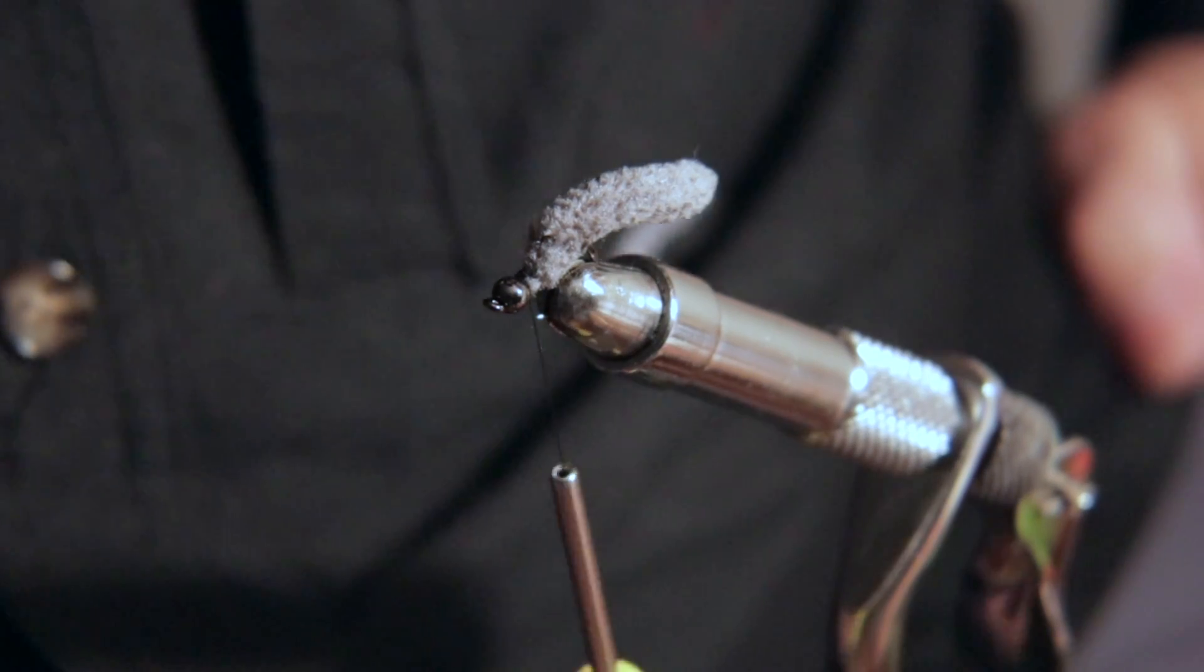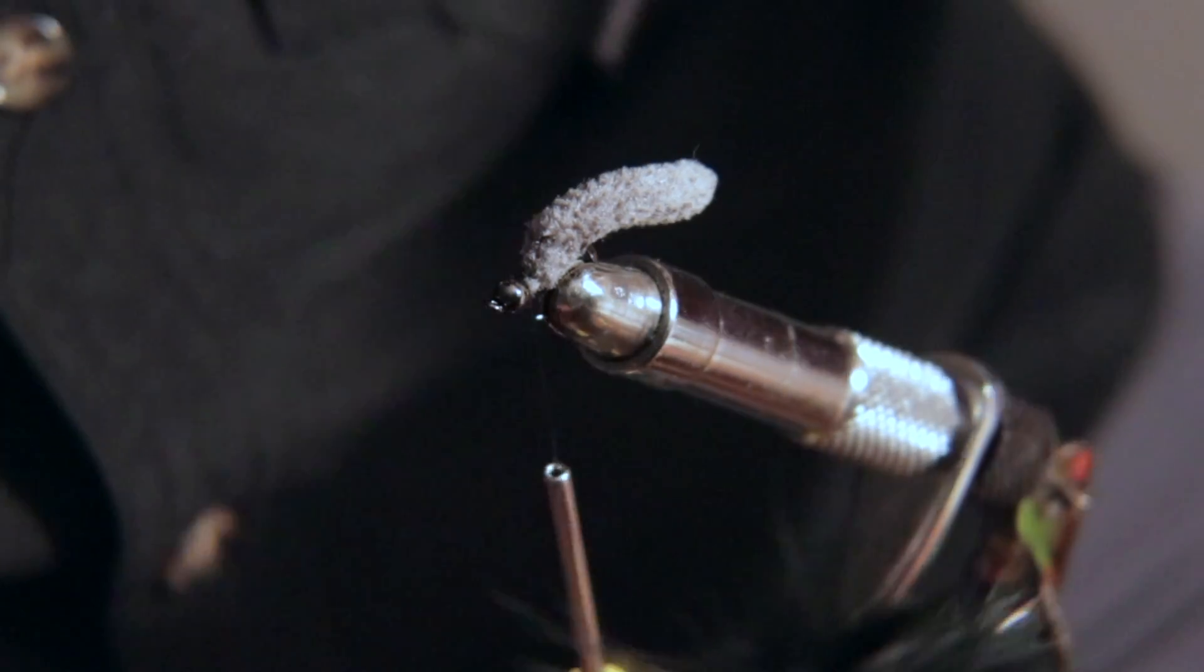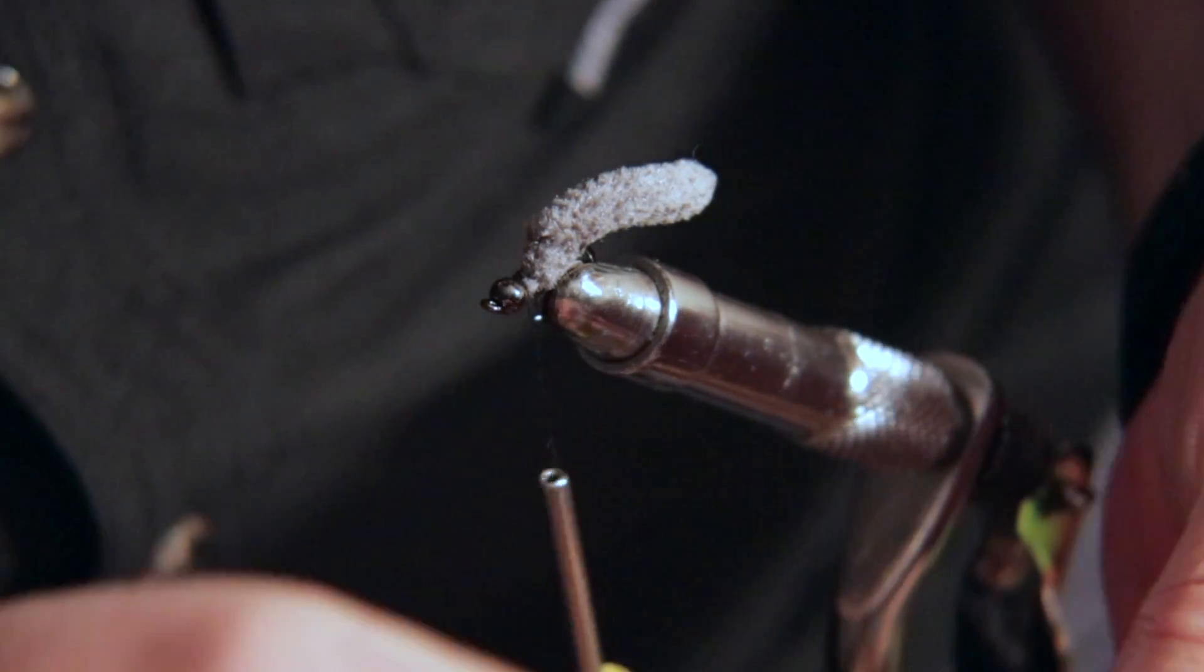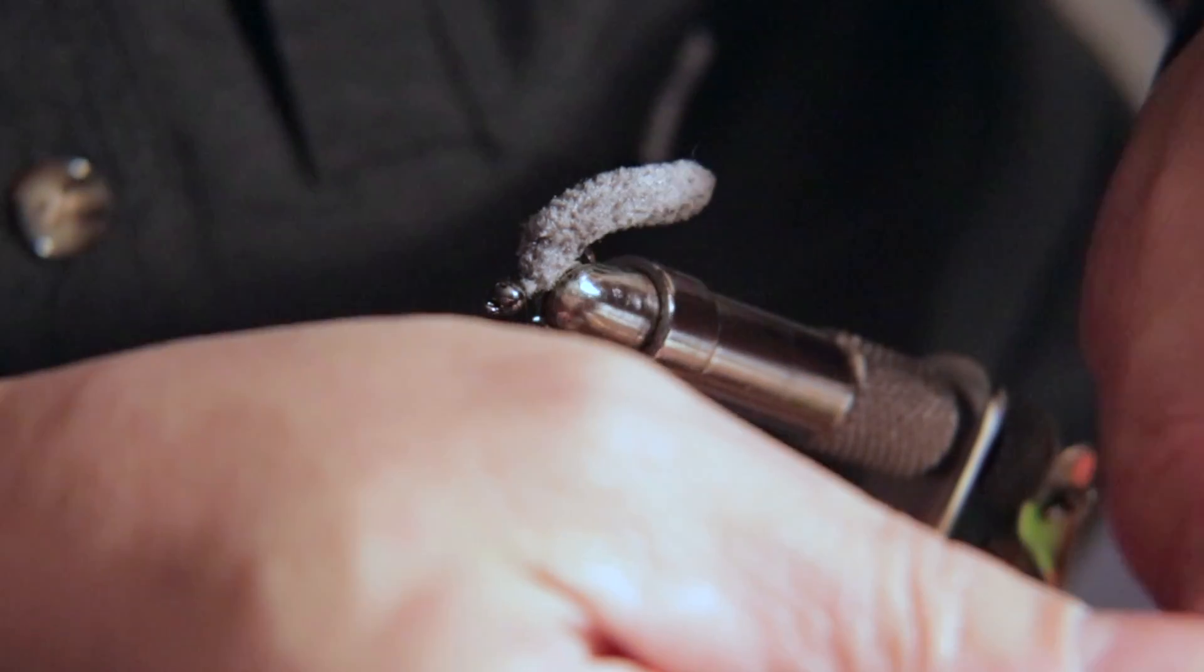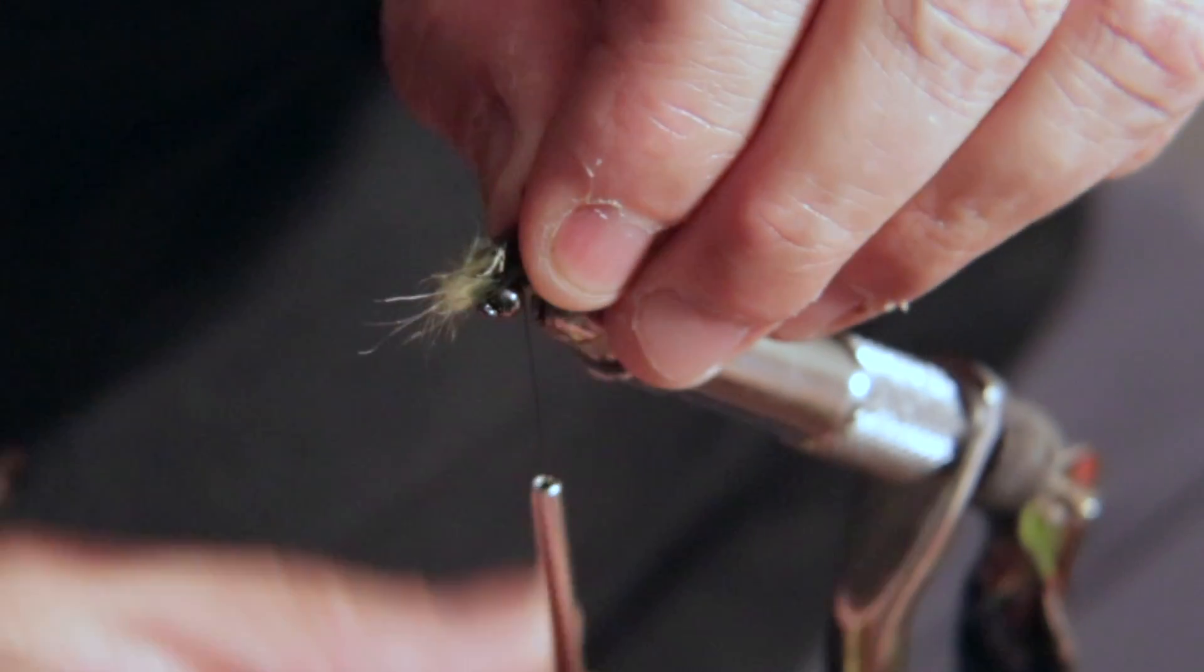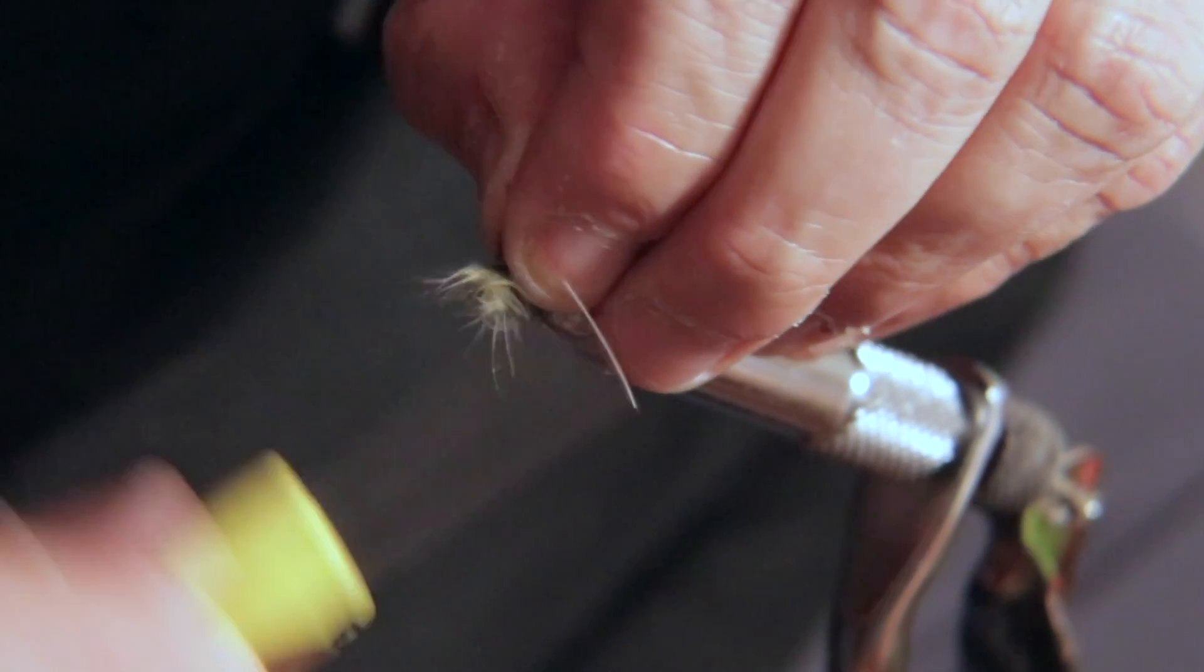Then the next thing I'm going to do is, this is just marabou, just a pretty simple marabou. I'm going to take, I don't know, just two or three, sometimes I end up with four, just little pieces, little individual strands off the feather. And go ahead and tie that in next.